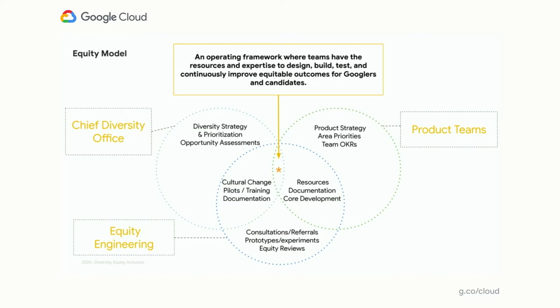We partner really closely with the chief diversity office to make sure we understand Google's broad diversity strategy, the prioritization, and the opportunity assessments we can carry forward. We then help drive cultural change by creating pilots, training, and documentation for our technologists to inform product strategy, area priorities, and team objectives and key results. Lastly, we empower all teams by providing consultations and referrals to internal or external experts, helping with prototypes and experiments, and doing reviews for existing products that are in flight or ready to launch.